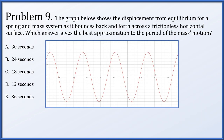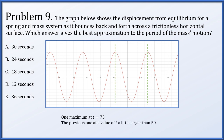In problem 9, we have a graph showing the displacement from equilibrium for a spring and mass system bouncing on a frictionless horizontal surface. We find one maximum at t equals 75 and the previous maximum is just above 50. So one full period spans from just above 50 to 75, making the period just a bit less than 25. Of the five options, option B is just a bit less than 25.